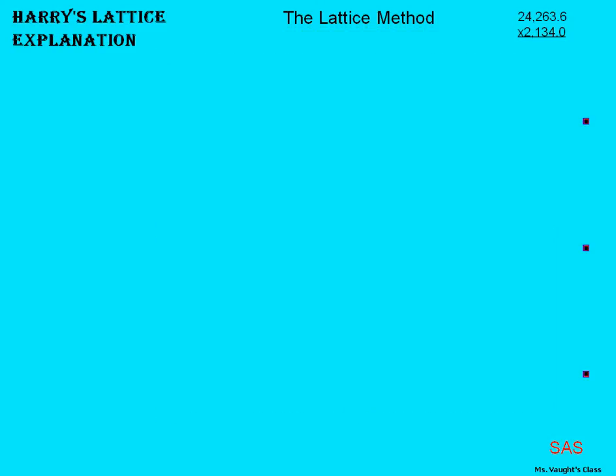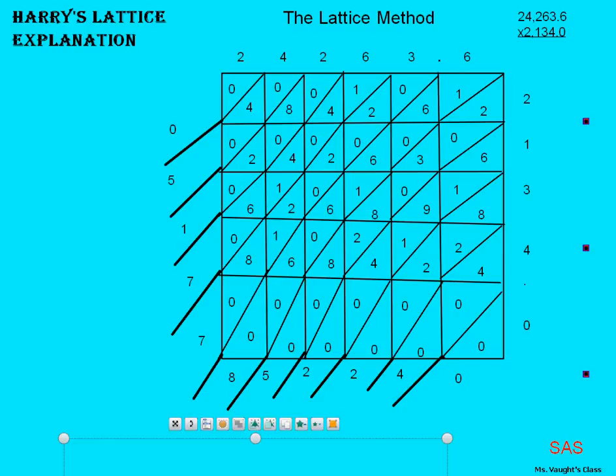24,263.6 times 2,134.0. So first, we'll write the numbers down like they were before. Then we will make boxes.